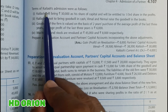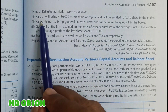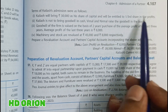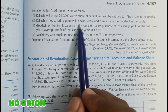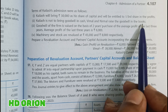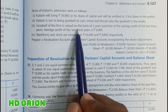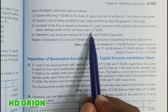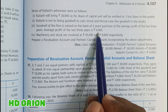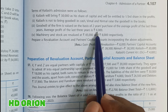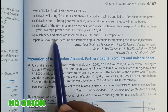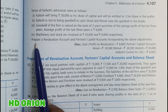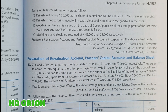The terms of Kailash's admission are as follows: Kailash will bring rupees 30,000 as his share of capital and will be entitled to a one-third share in profits. Kailash is not to bring goodwill in cash; Vimal and Nirmal raise the goodwill in the books. Goodwill is valued at two years' purchase of the average profit of the last three years, which is rupees 6,000 — so firm goodwill is rupees 12,000. Machine and stock are revalued at rupees 45,000 and rupees 8,000 respectively.